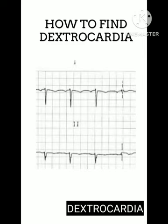A second ECG should be recorded with chest electrodes V3 to V6 positioned on the right side of the chest, using the same intercostal spacing and anatomic landmarks, but placed on the right side of the chest.